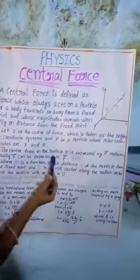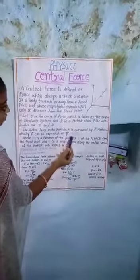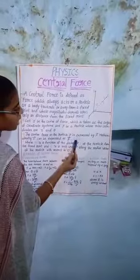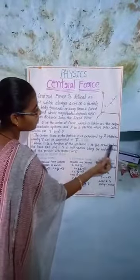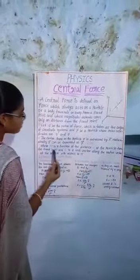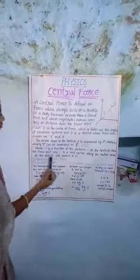The force on the particle P is expressed by F bar. Mathematically F bar equals R cap into F of R, where F of R is the function of distance R of the particle from the fixed point. R cap is the unit vector along the radius vector of the particle with respect to O.